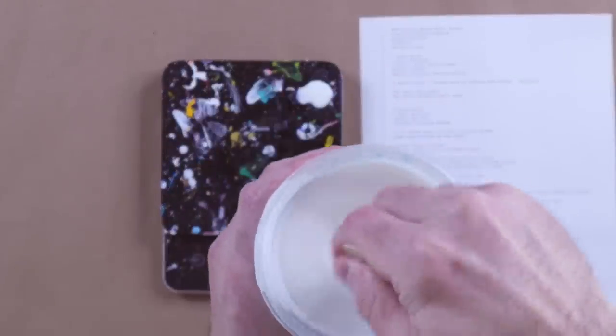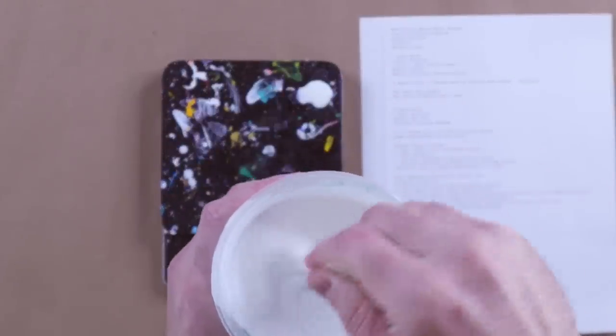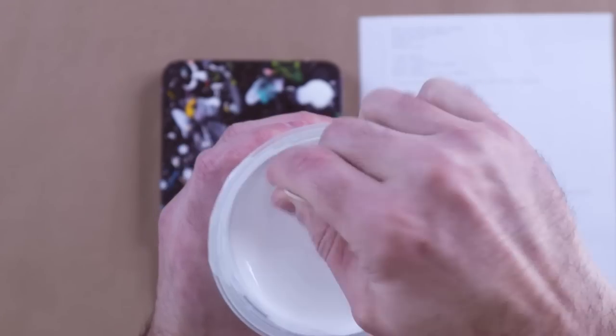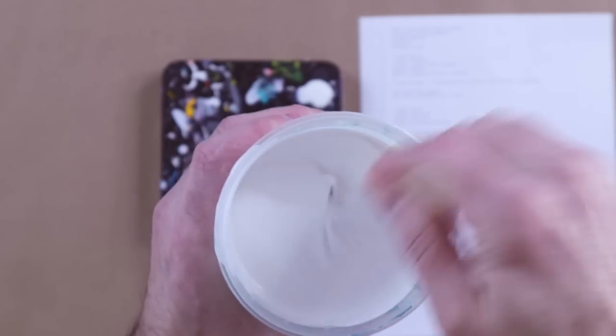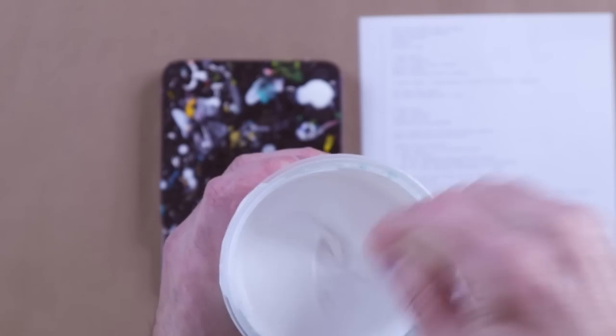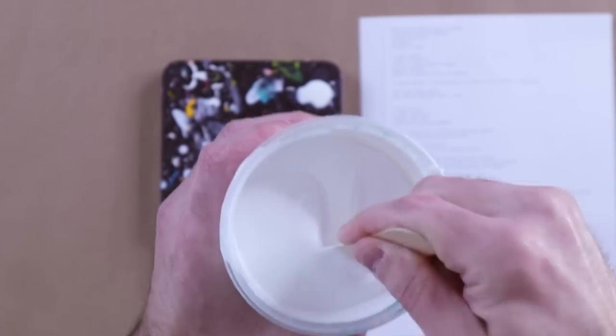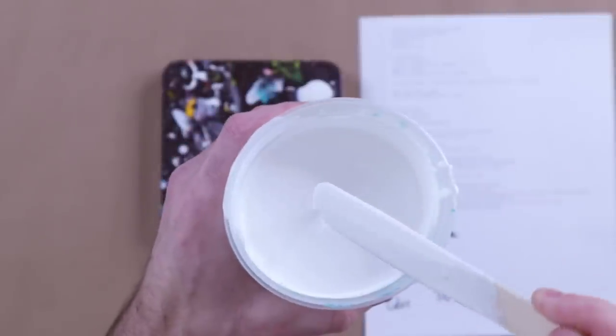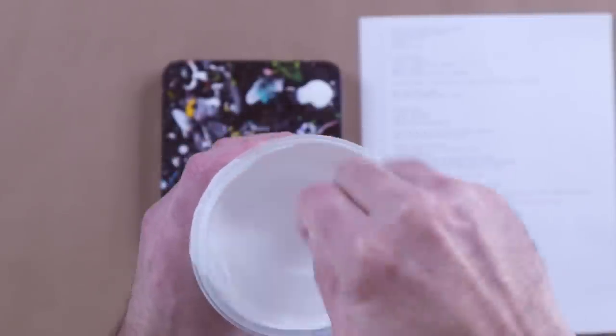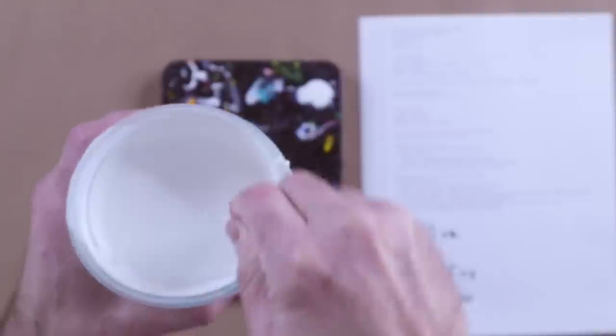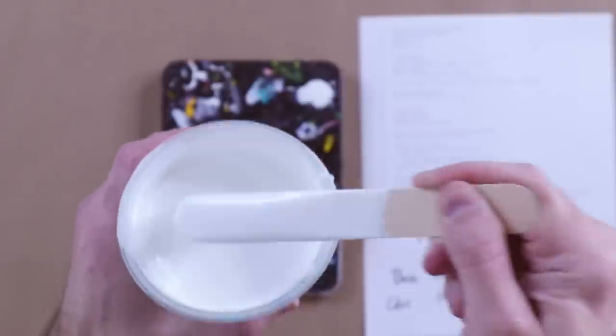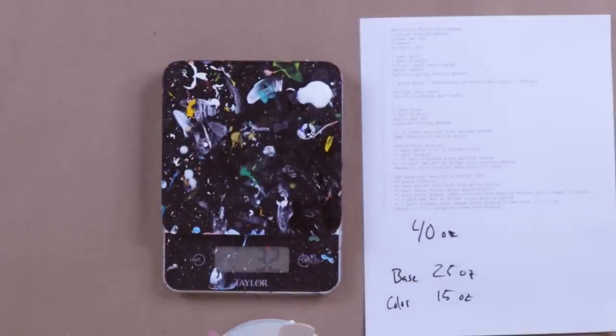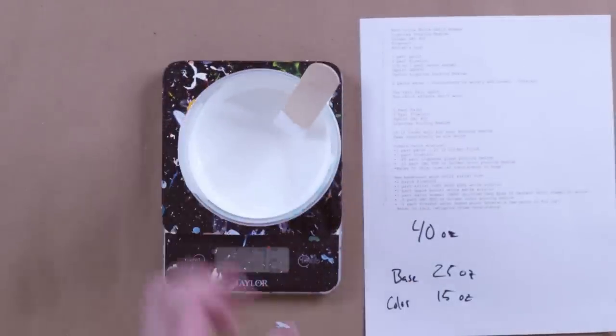And again, I want a half part of this GAC800. So we're going to go another 90 or so. Now we're going to mix that up. And you want to mix this way more than you think because you have so many different pouring mediums in there. More mixing is better.